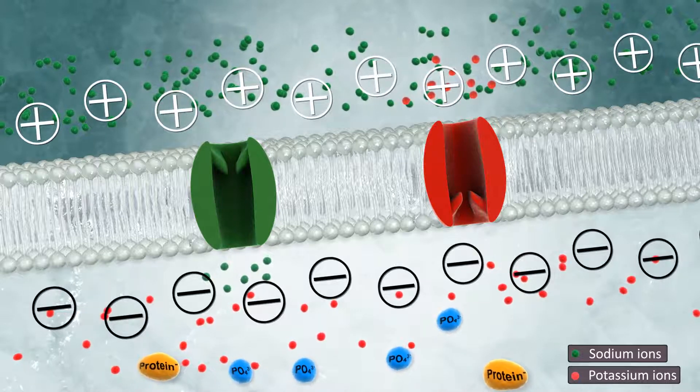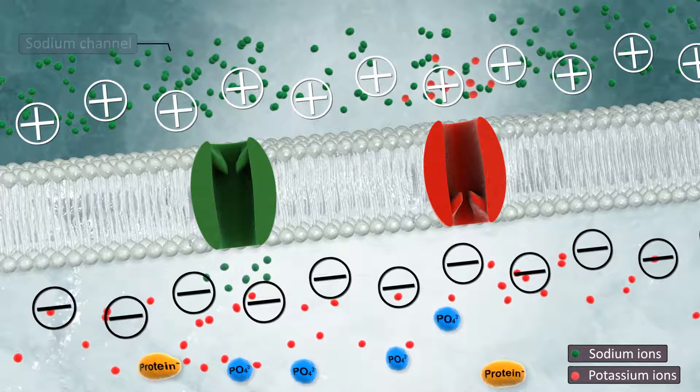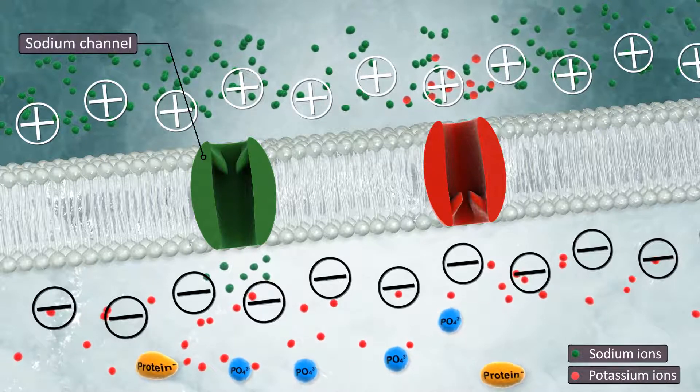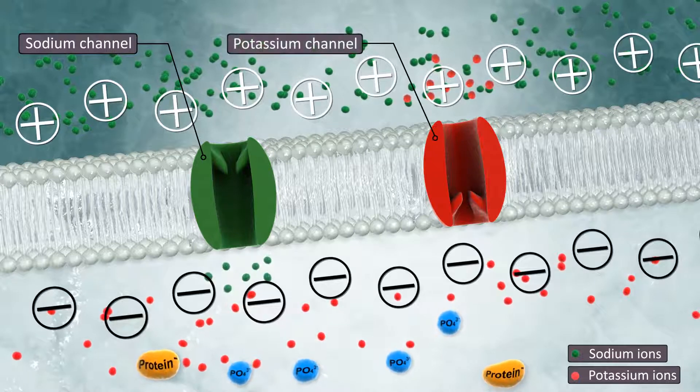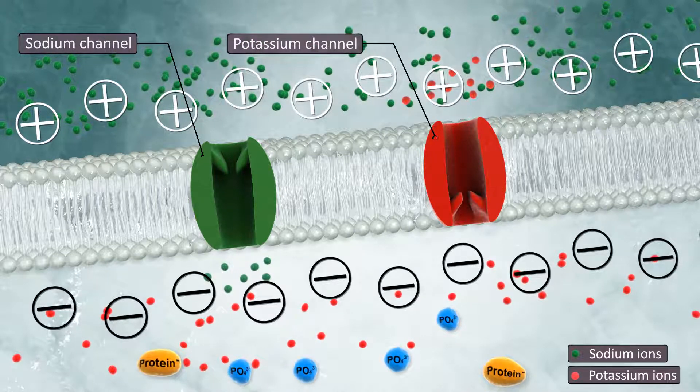Typically, sodium ions tend to enter the cell through an open sodium channel, and potassium ions tend to exit the cell via potassium channels. There are four types of channels through which ions can pass.